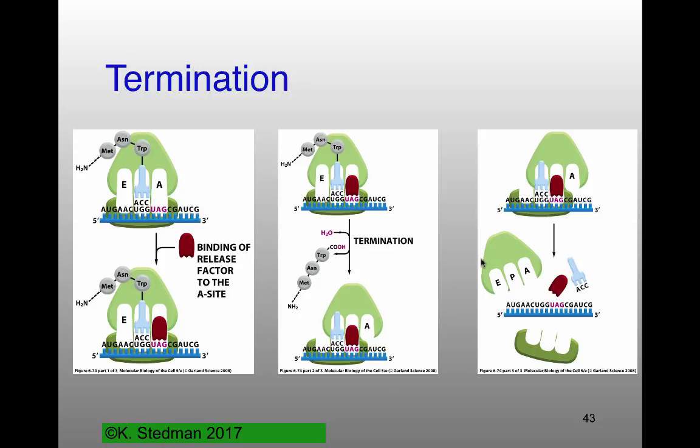In eukaryotes, the 3' end is very close to the 5' end and can reassociate there for the next round of translation. In bacteria, there's usually a second ribosome binding site for the next cistron in a polycistronic messenger RNA, allowing continuous translation.